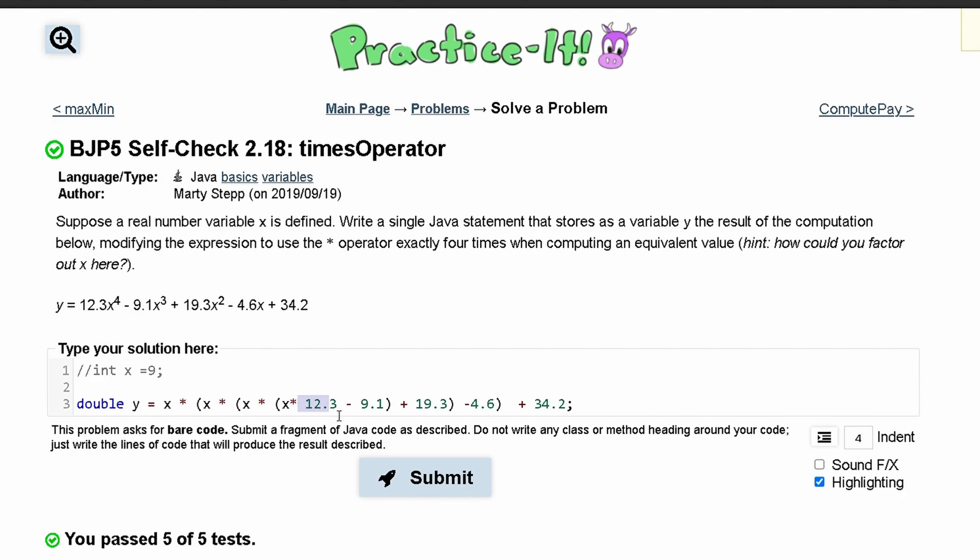First we have 19.3, and since it's the only one with x to the fourth, we are going to multiply it by x straight away. Next we have these three x's that are going to be factored into this 9.1, which will give us x cubed.